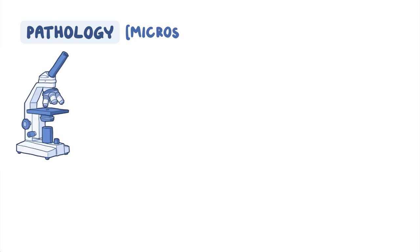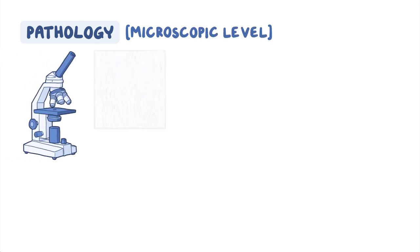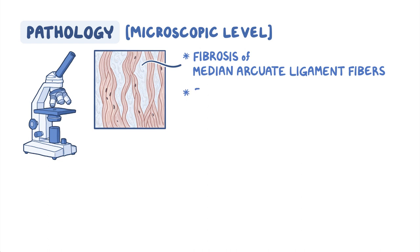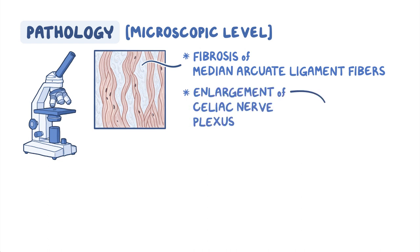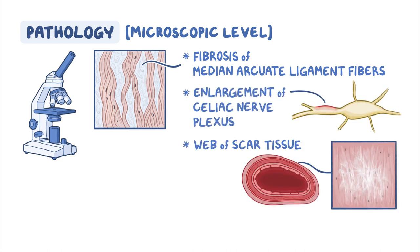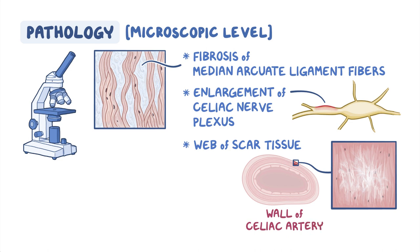At a microscopic level, MALS shows fibrosis of the median arcuate ligament fibers, enlargement of the celiac nerve plexus, and a web of scar tissue within the wall of the celiac artery.